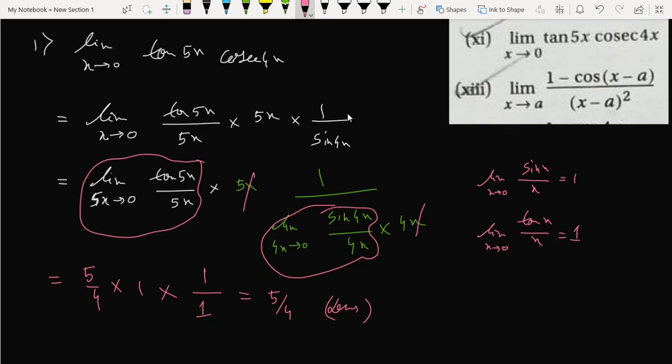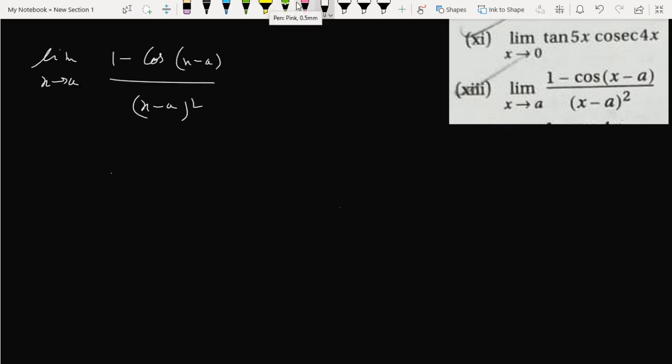Okay, now we know the formula like this: cos 2x is 2 cos square x minus 1. That means it has another kind of formula, like 1 minus 2 sine square x also.